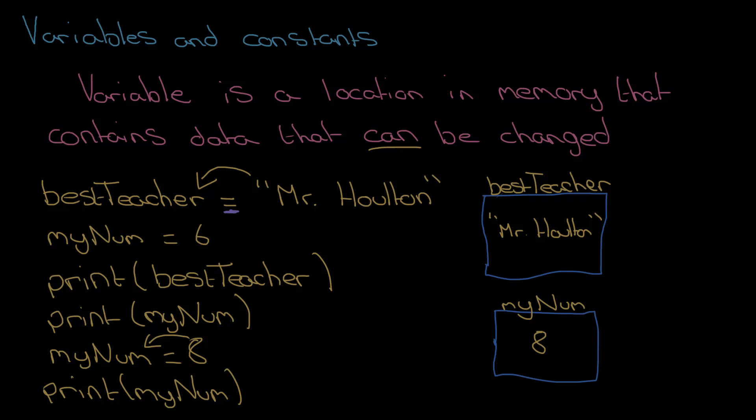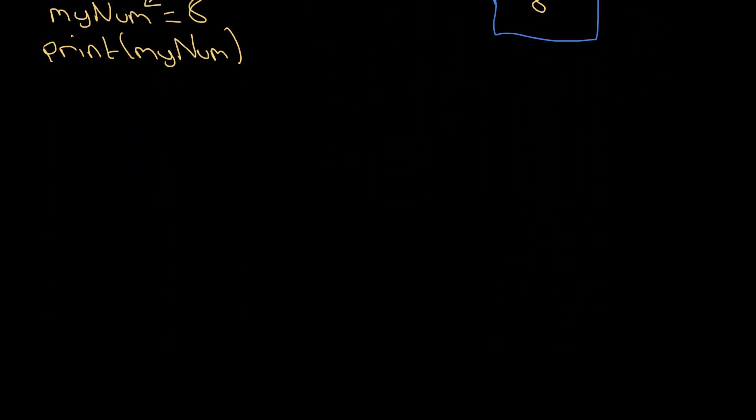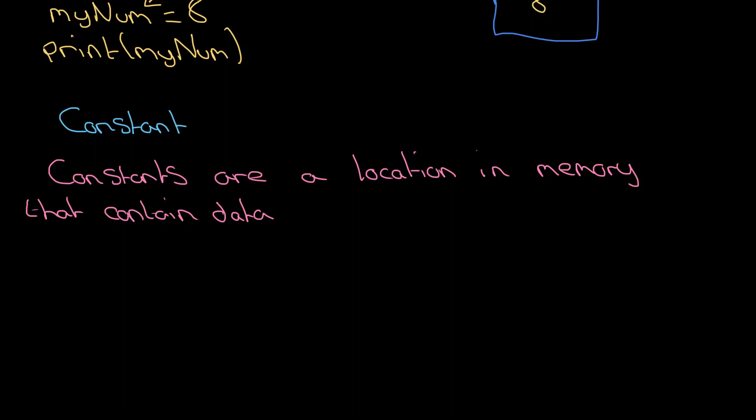So what are constants? Well they are nearly exactly the same. So let me give you the definition of a constant now and it's fairly simple. So constants, they are a location in memory. So that should sound familiar. They're a location in memory that contains data that, wait for it, cannot be changed.